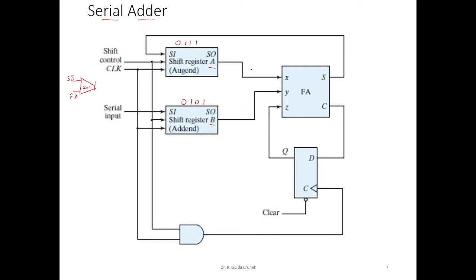So for the first instance, this 1 will come here and this 1 will come here. And when we add 1 with 1, the sum is going to be 0, carry is going to be 1. So this 0 will be fed to A. So 0 will be coming and this will be pushed out and discarded.